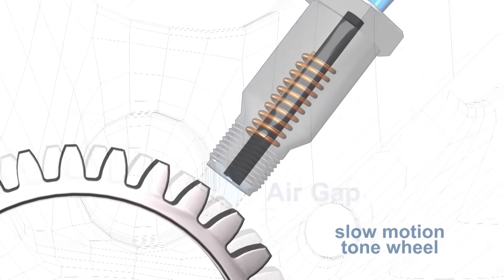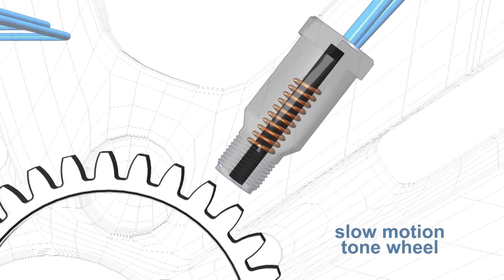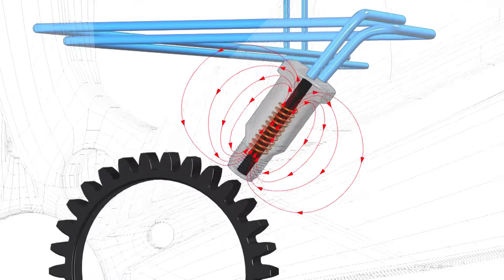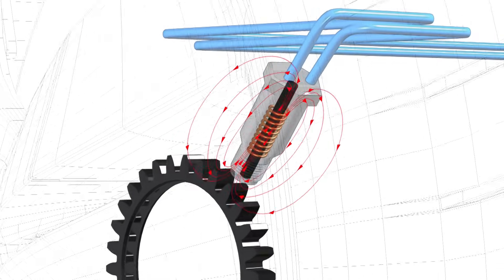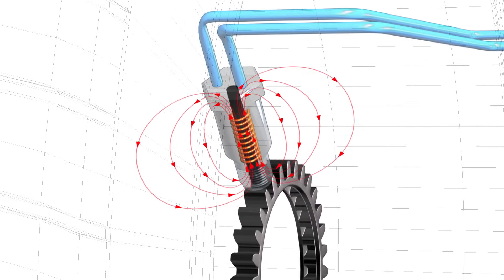As the tone wheel rotates the air gap between the pole piece and the teeth change. As this occurs the magnetic field or flux from the permanent magnet within the sensor will expand and contract in time with the approaching and receding tooth.